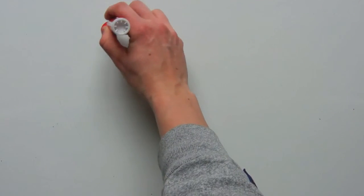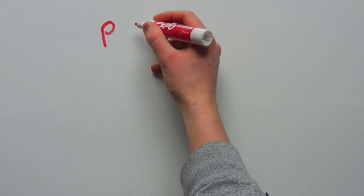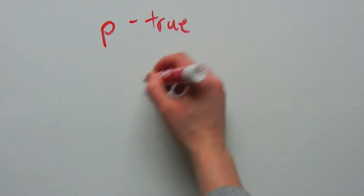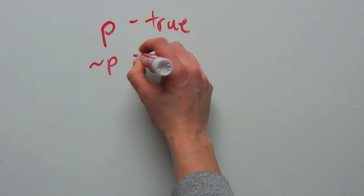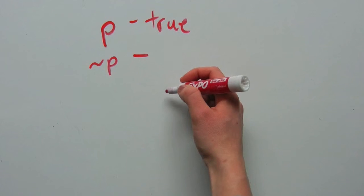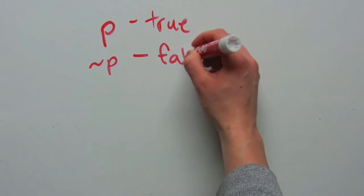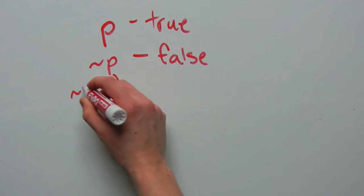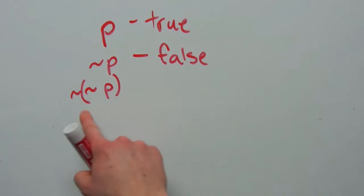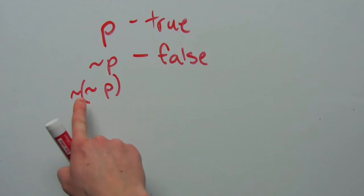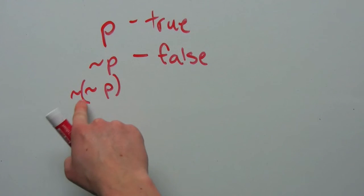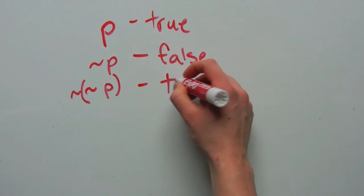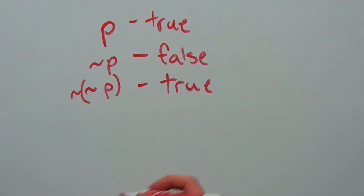So if I had some statement P and that P was true, then not P would be false. Not not P — so we're negating the not P — switching the truth value of not P, would be true. And so on.